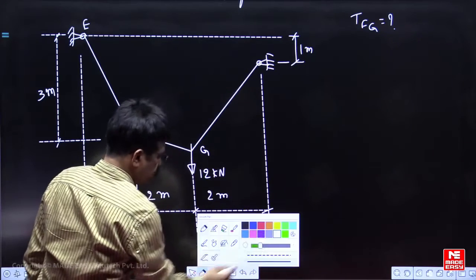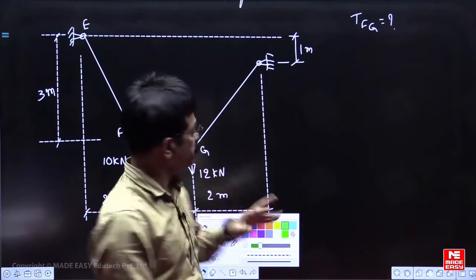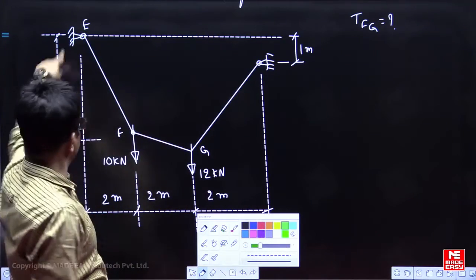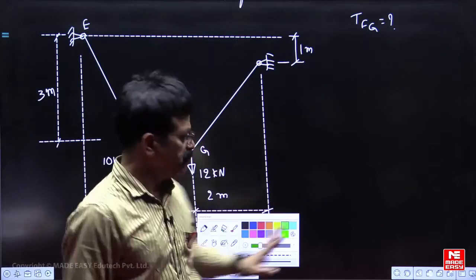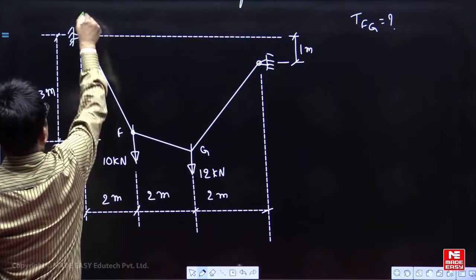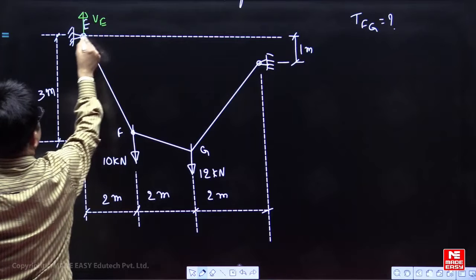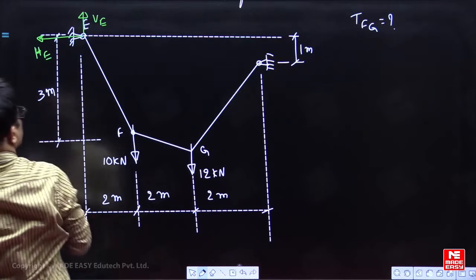Now, in cable structures sag of at least one point they have to give us. Sag of F they have given as 3 meters. So, 4 equations, 4 unknowns. So, we can manage the problem. Here you will get VE, vertical reaction at E, and horizontal reaction at E.